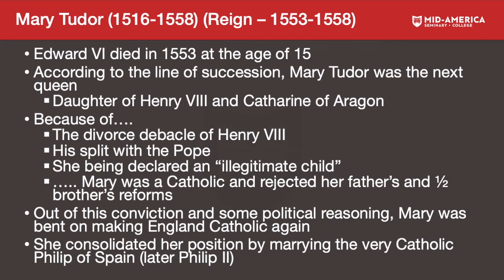Mary was the daughter of Henry the Eighth and his first marriage to Catherine of Aragon. Because of her father's divorce debacle and split from the Pope, she had been declared an illegitimate child. Because of these three things — the divorce, the split, and the illegitimacy declaration — Mary became a staunch Catholic. She rejected her father's and half-brother Edward the Sixth's reforms, and took the country right back to Catholicism, both from conviction and political reasoning.